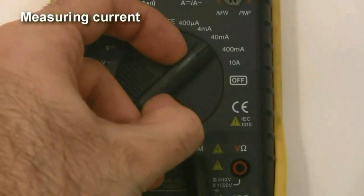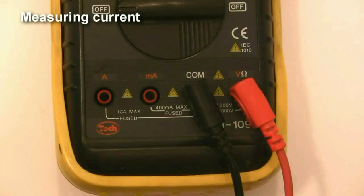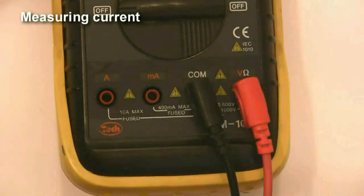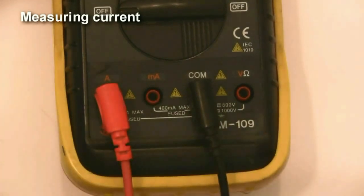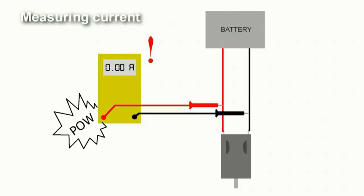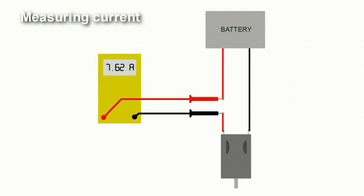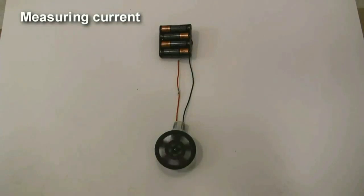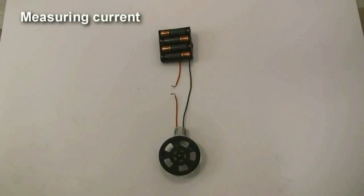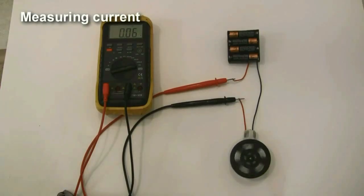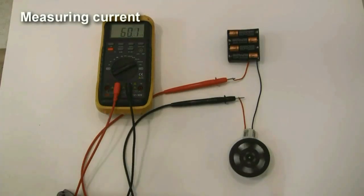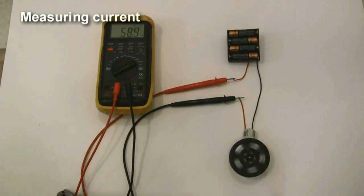Finally, let's use our multimeter to measure current. Set the dial to the amp setting. Most multimeters have a separate jack just for measuring current — mine has two: one for currents up to 10 amps, and one for currents up to 400 milliamps. Measuring current is trickier — you can't just touch the probes. You have to cut the wire and splice in the multimeter in series with the circuit. Here I have a simple circuit with a battery pack, a motor, and wires. I cut the wire, splice in the multimeter, and now I can see the motor is drawing 68 milliamps.